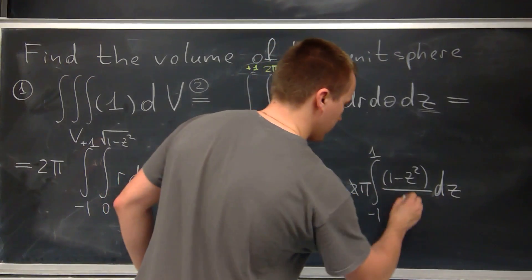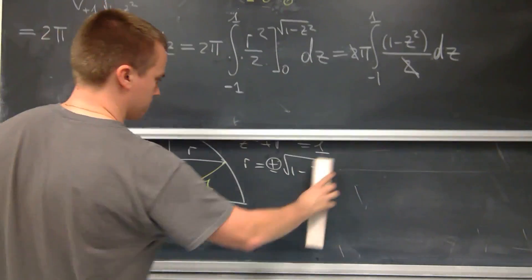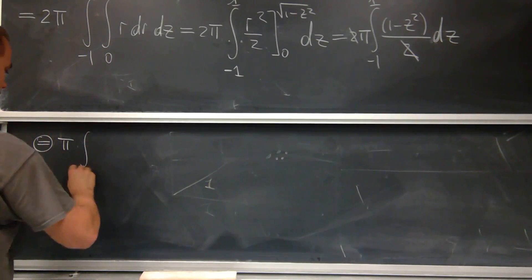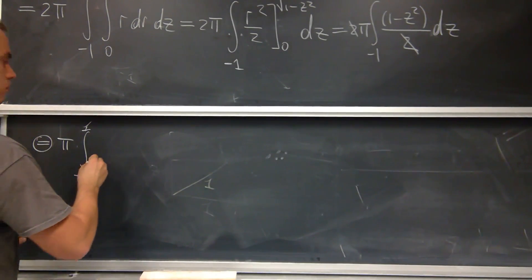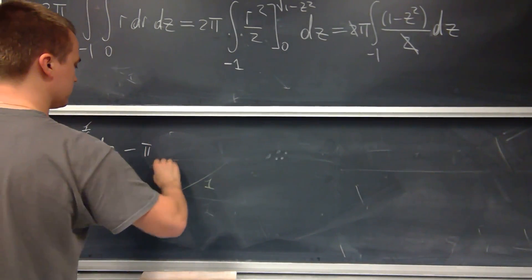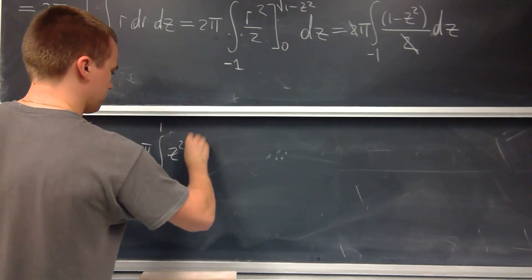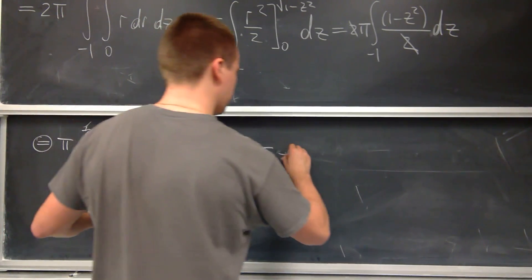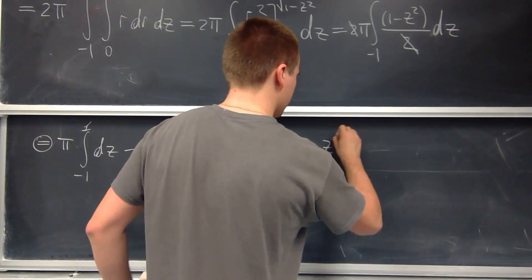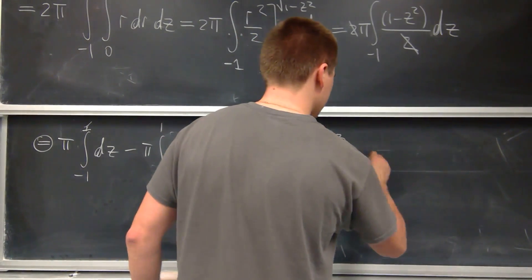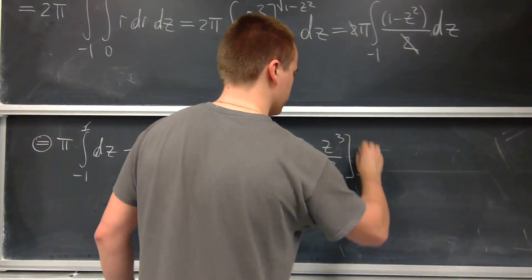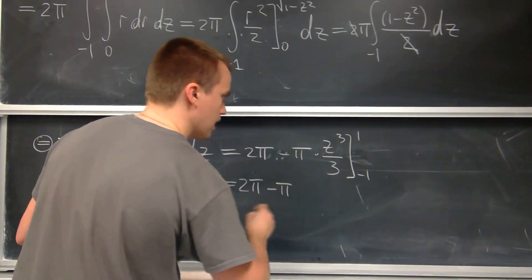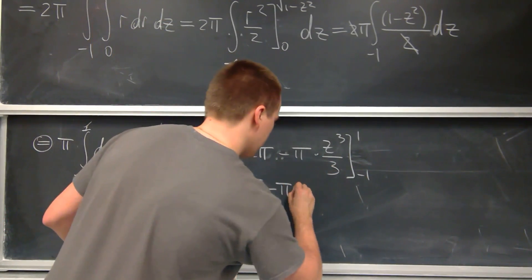After cancellation I get π times the integral from -1 to 1 of dz, minus π times the integral from -1 to 1 of z² dz. The first integral equals 2π. The second integral gives π times z³/3 evaluated from -1 to 1, which equals π times (1/3 - (-1/3)) = π times 2/3, so it equals 2π/3.